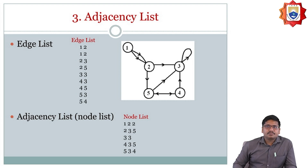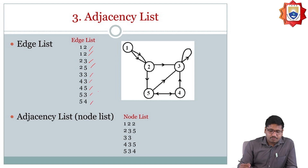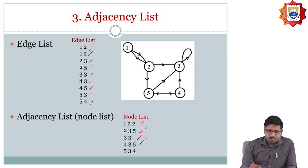Adjacency list: the edge list and adjacency list. What are the nodes that are connected — those are going to be listed here. For node 1, the connected nodes are listed. For node 2, the connected nodes are 3 and 5. For node 3, the connected nodes are 4 and 5.